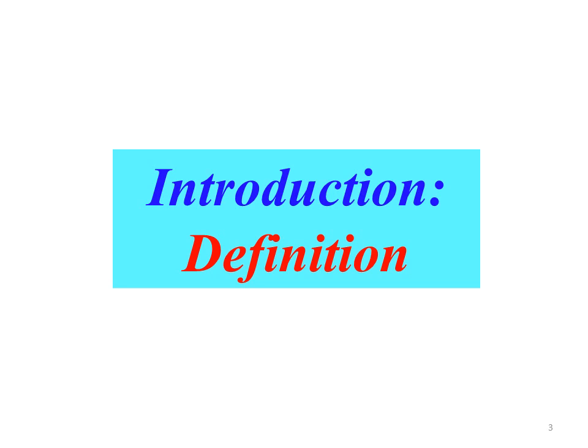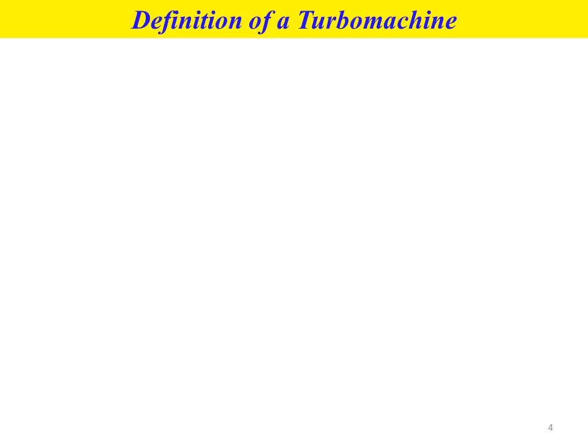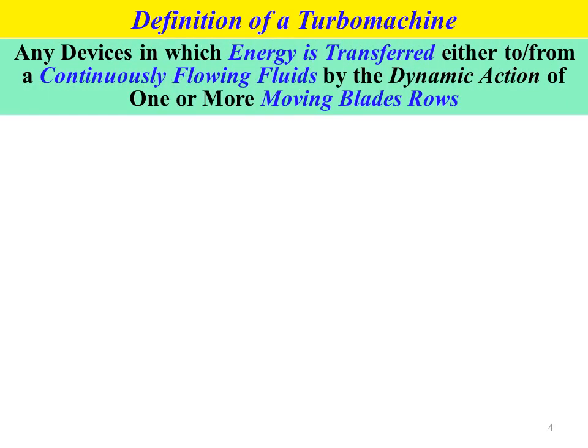Now let me discuss the definition of a turbo machine and identify its main keywords. A turbo machine is any device in which energy is transferred either to or from a continuously flowing fluid by the dynamic action of one or more moving blade rows. There are three main keywords: energy is transferred, continuously flowing fluid, and moving blade rows.